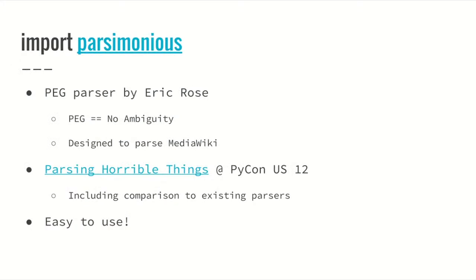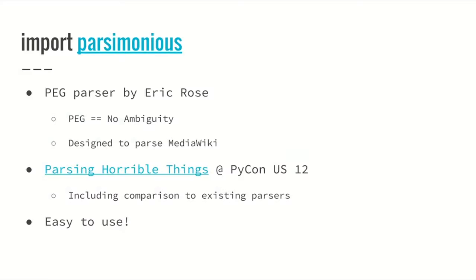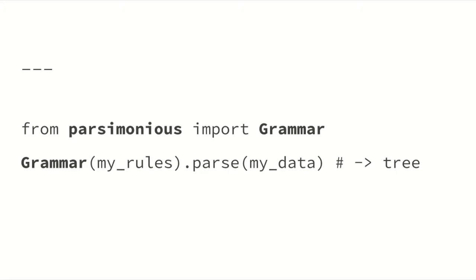I found Parsimonious, which is a PEG parser written by Eric Rose. PEG parsers are special types of parsers where you can't have grammar ambiguity — you can define a grammar with ambiguity, which the parser resolves deterministically. Eric Rose used it to parse MediaWiki, which was previously parsed by a bunch of regexes in a huge PHP file. You should check out 'Stop Parsing Horrible Things' at PyCon 2012, where he compares his experience with other parsers. The thing I like most about Parsimonious is that it's really, really easy to use — two lines of code. All you have to do is give it a chunk of text which is your grammar, and your data, and it emits a tree.